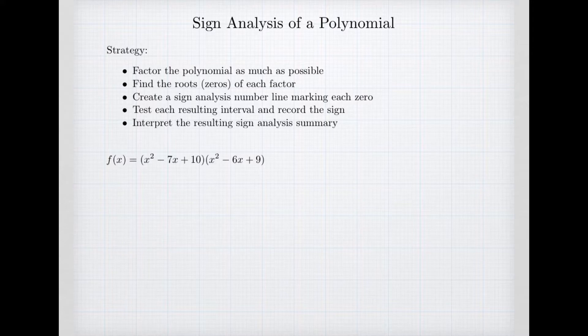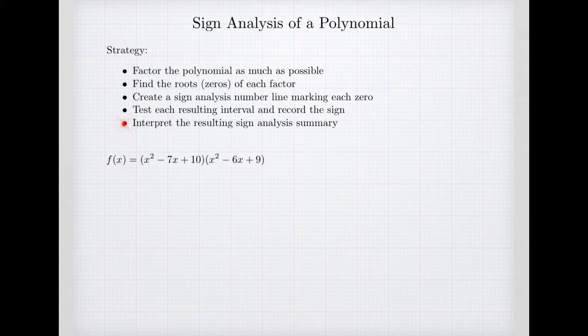Our basic strategy is outlined. We're going to factor as much as we can. Because it's factored, we're then going to look for the roots or the zeros of those factors. We'll use those roots to create a number line showing those roots as the breakpoints — that will create a whole bunch of intervals. We'll then test each interval by choosing a point from the interval and identify what sign our polynomial has on the interval. And once we have our sign analysis summary, we're going to interpret our results.